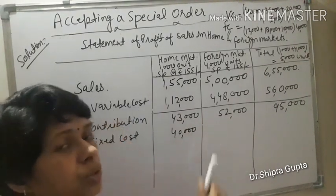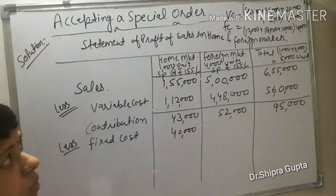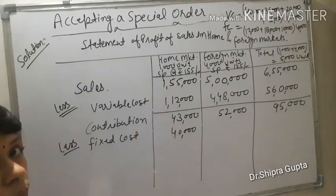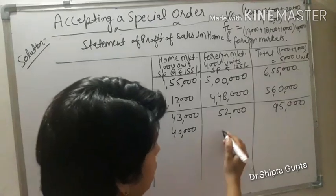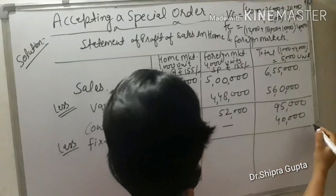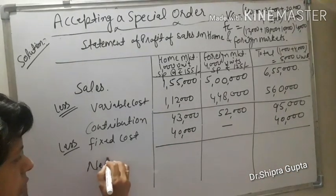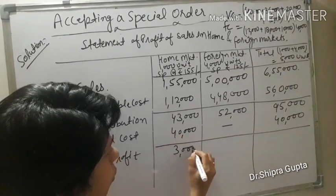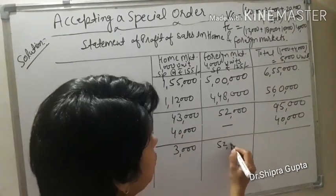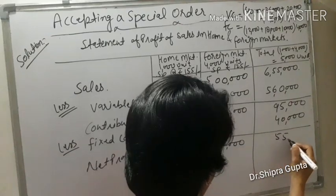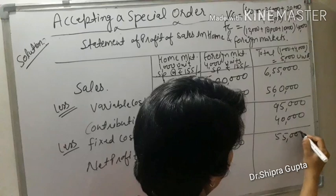Less fixed cost: fixed cost for 1000 home market units is ₹40,000. For the foreign market special order units, we will ignore fixed cost because it is a special additional order — fixed cost is already covered by the 1000 home market units. Net profit: home market ₹3,000, foreign market ₹52,000, total net profit ₹55,000.